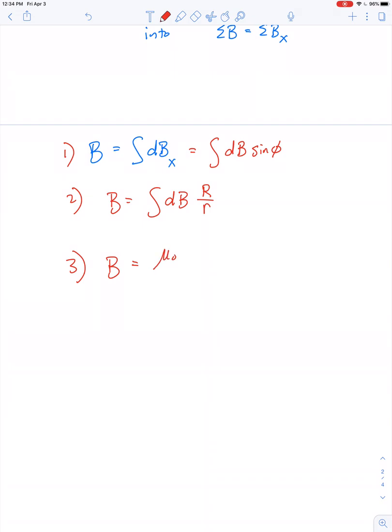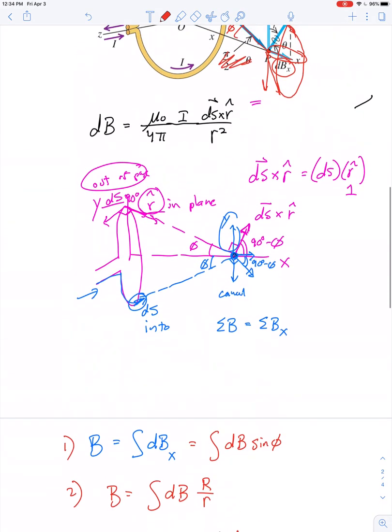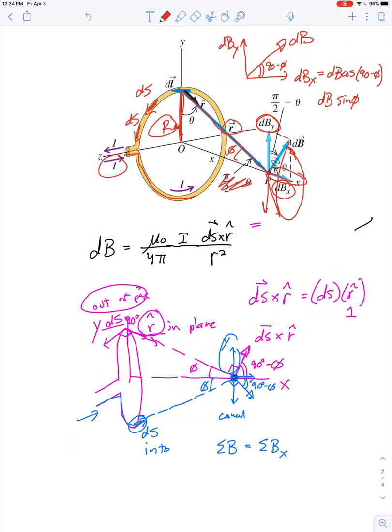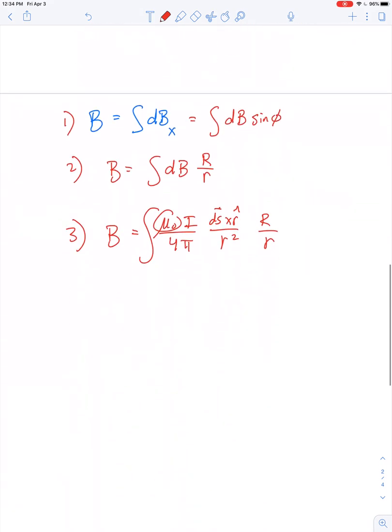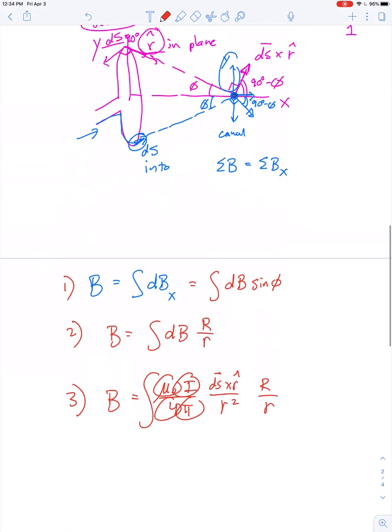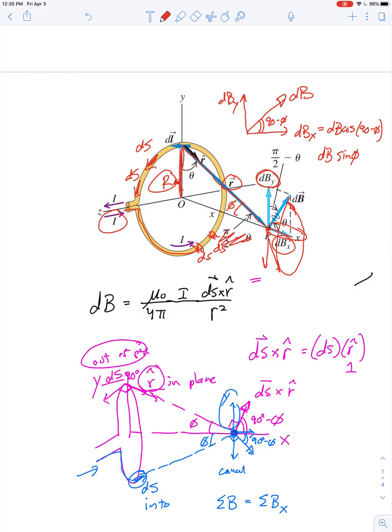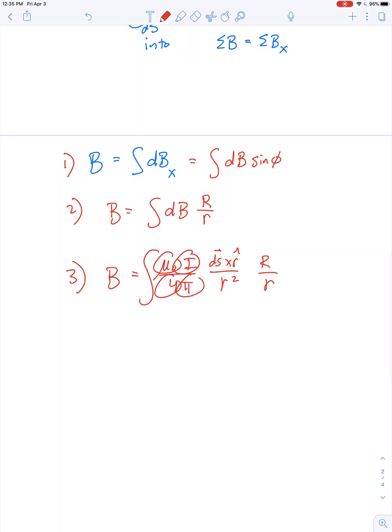So we get mu naught i over 4 pi ds cross r hat over r squared times R over r. Trying to sum up all of that. So constants, mu naught, what else? Well, the amount of current that's flowing through this loop is the same amount of current for any one of these ds. So current's a constant. That comes out of the integral for pi. How about this? How does the distance from this ds, which we've labeled as r, compare to the distance from this ds to the point in question? Isn't that the same value, r? So all of the rs are constants.